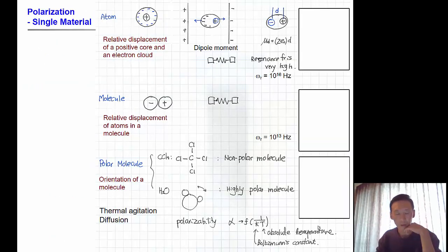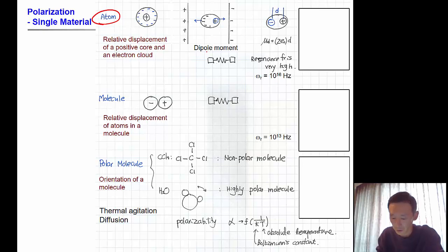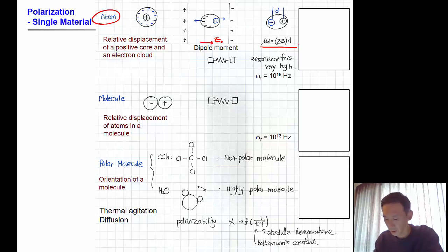Polarization of a single material can be divided into several scales. At the atomic scale, the electron cloud can be displaced in response to the electric field. When the electric field is applied, each atom can develop a dipole moment. This dipole moment is z times e-naught times d for a single atom, and it is called electronic polarization.